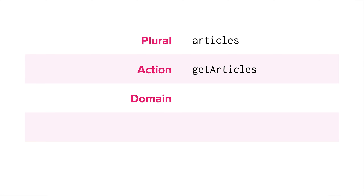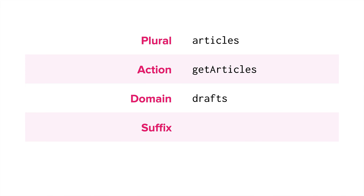Next we have domain-specific queries. These provide a clear indication of the type of items that will be returned. They prove extremely useful when working with queries that will return multiple types, especially with GraphQL union types. Then we come to queries with the collection suffix, like 'articleCollection'. These clearly highlight that the query will return a collection of items. However, the term 'collection' can often be redundant, leading to a longer query name.